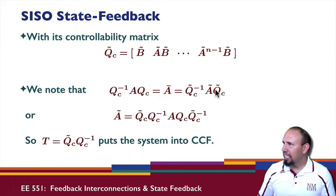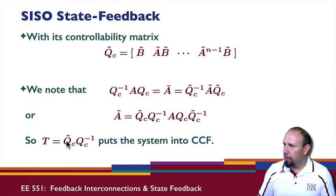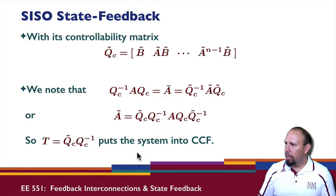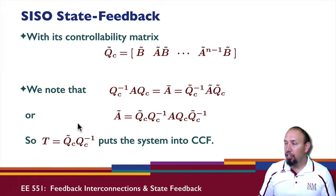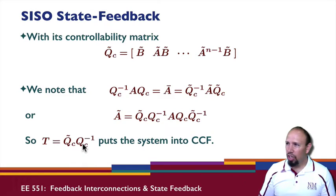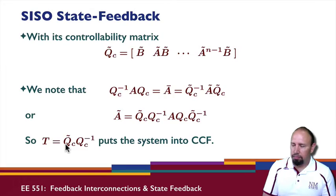As a result, I can set these equal to each other, solve for A-tilde, and get this expression. If I take this quantity, I can call that my transformation matrix. This transformation matrix is multiplied on one side and its inverse on the other, putting the system in the original coordinates into controllable canonical form. This transformation clearly depends on the system being controllable. If the system is not controllable, this will not serve as a transformation matrix.